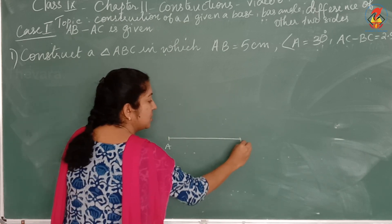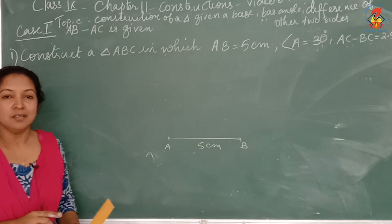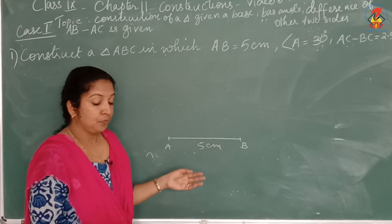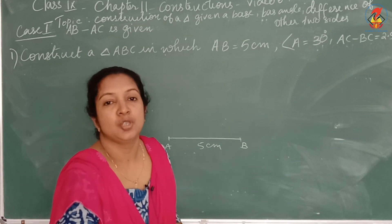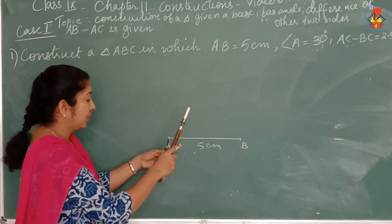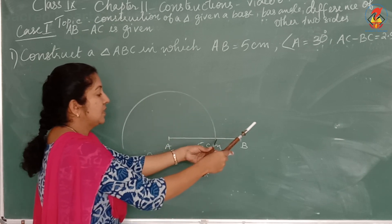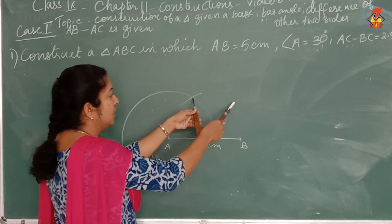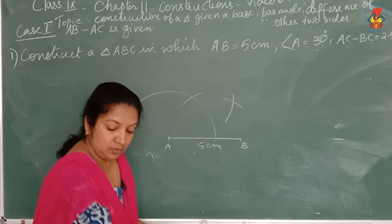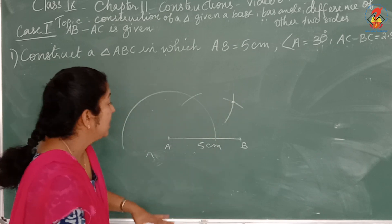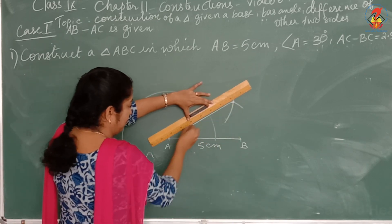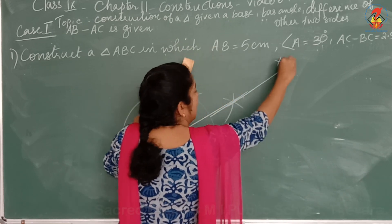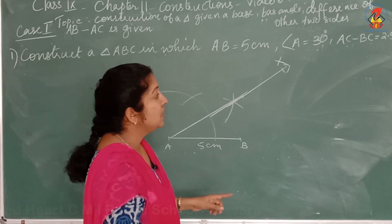Draw line segment AB and mark it as 5 cm. I am not taking the actual 5 cm scale since the figure will be too small. Then we need angle A as 30 degrees. To construct 30 degrees at A: first cut 60 degrees, then bisect it — take more than half, draw arcs from both points, mark the intersection, join A to that point, extend the line, and mark it as X.